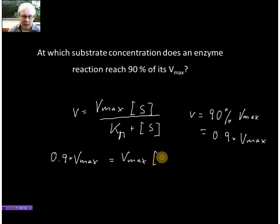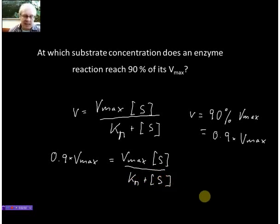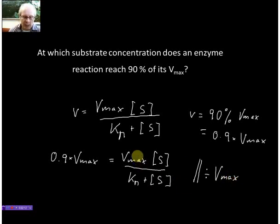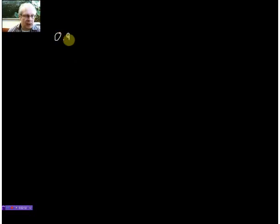So Km times the substrate concentration divided by Km plus the substrate concentration. And now it is just simple algebra. I divide both sides by Vmax, so this Vmax and this Vmax cancel out. We've got 0.9 equals S, the substrate concentration, divided by Km plus S.